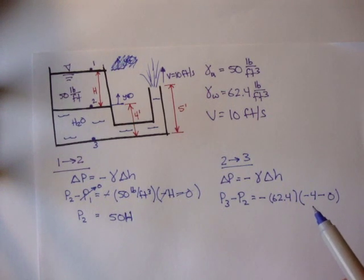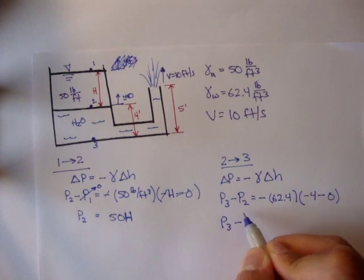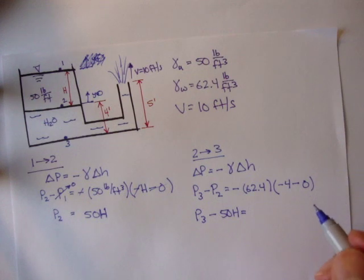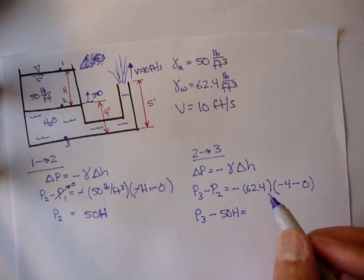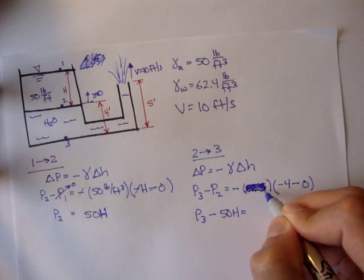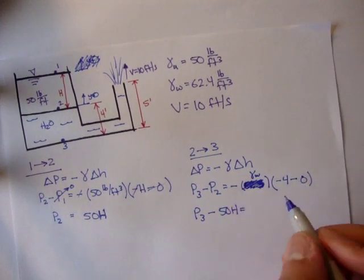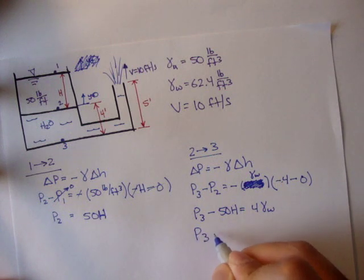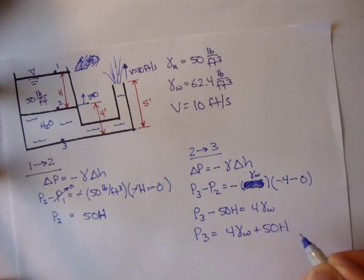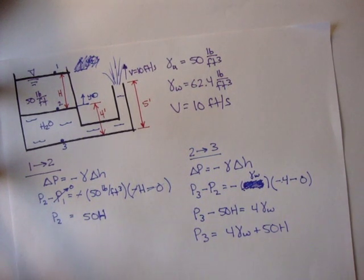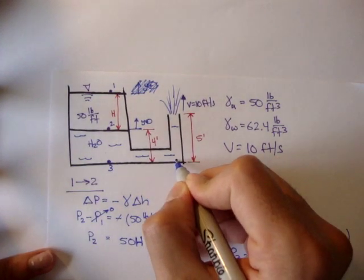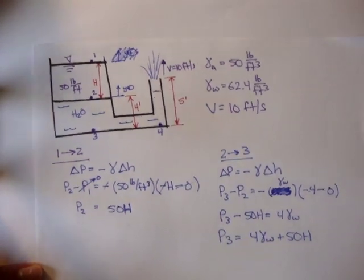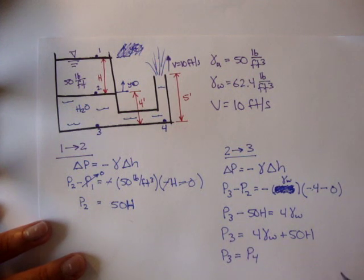So, the pressure at 3 minus pressure at 2 — where pressure at 2 is 50h — gives us P3 equals 4 gamma water plus 50h. Since pressures along the same horizontal line are equal, we can say pressure at 3 equals pressure at 4, at the bottom of the tube. So now we have pressure at 4.